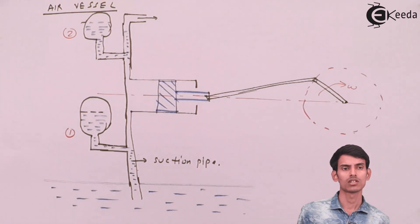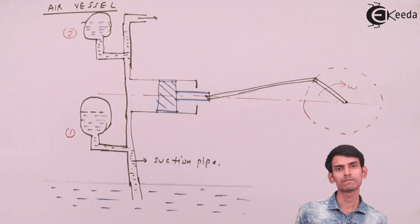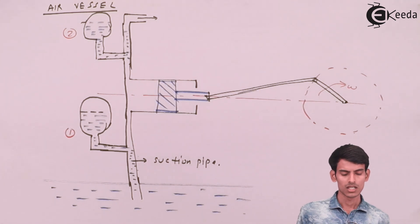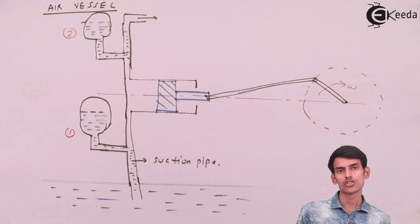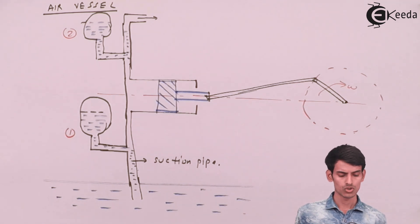The lesser the pressure fluctuations, the more is the efficiency of the pump, the more effective the pump becomes. Also it reduces the fluctuation of discharges, so the discharge becomes continuous.